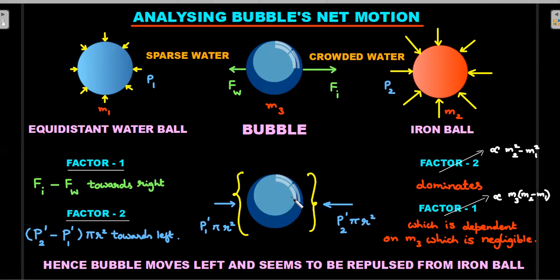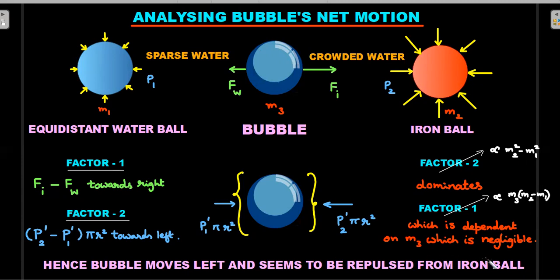So there are two competing factors: Factor 1 is Fi minus Fw — gravitational force proportional to m3·(m2 − m1)/r² — pulling the bubble toward the iron ball. Factor 2 is the pressure force (P2-prime − P1-prime)·πr², pushing it away, proportional to m2² − m1². Since m3 is negligible, Factor 2 dominates, and the bubble moves away from the iron ball — apparent repulsion.